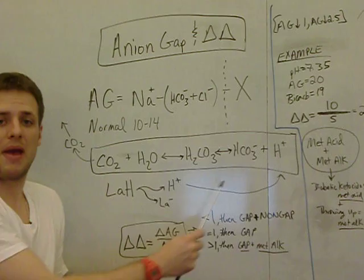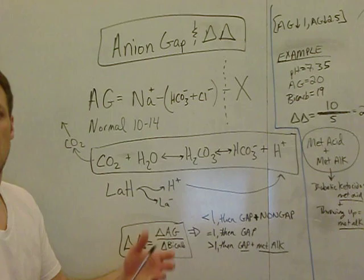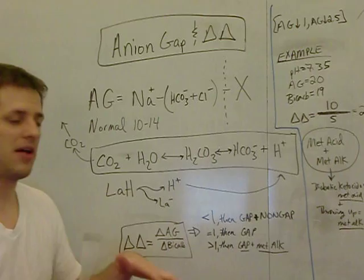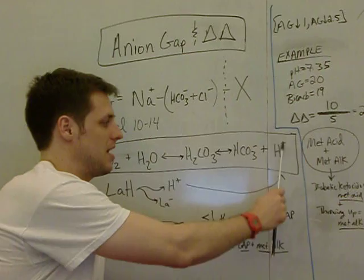This is the whole basis of being able to buffer your blood by breathing faster and blowing off CO2 or making your blood more acidemic by slowing down your breathing and retaining CO2 and thus driving the reaction this way and getting more protons.